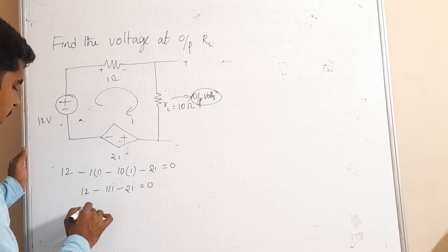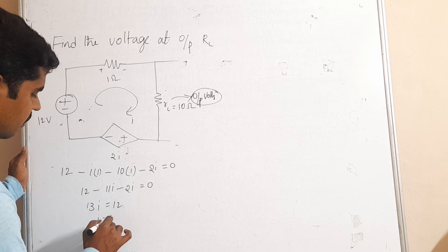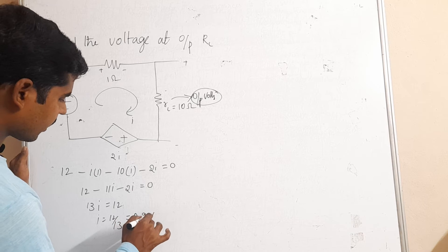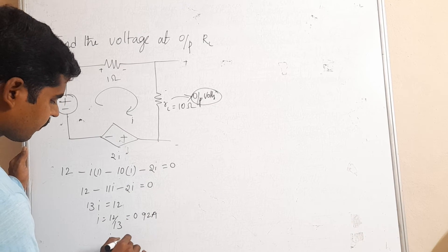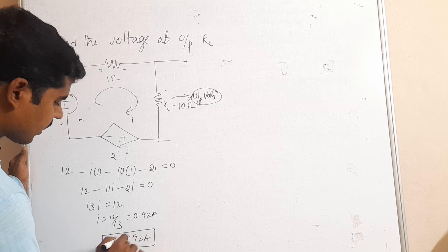That gives rise to 13I is equal to 12, I is equal to 12 by 13. So this value is approximately 0.92 amperes, therefore I is equal to 0.92 amperes. So this is the current passing through the corresponding circuit.